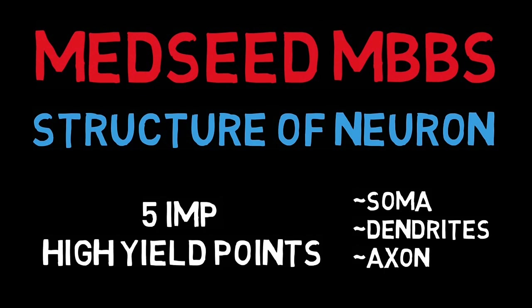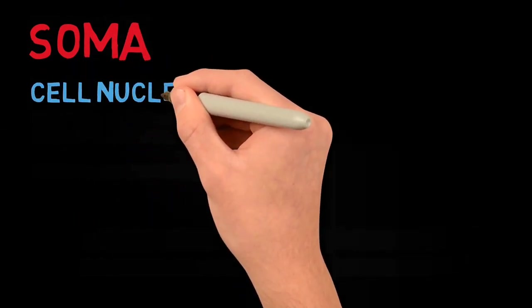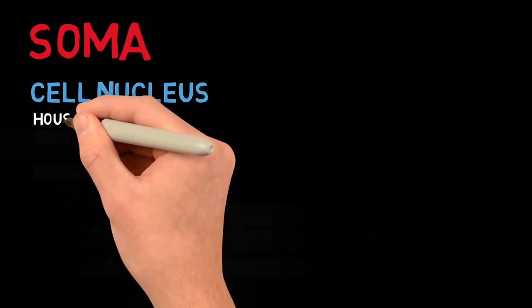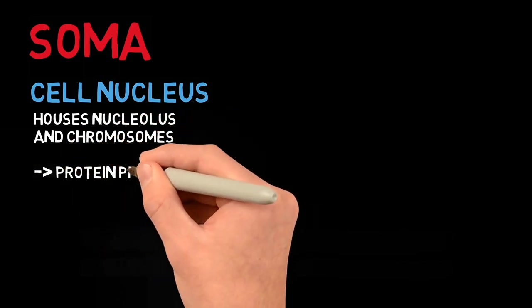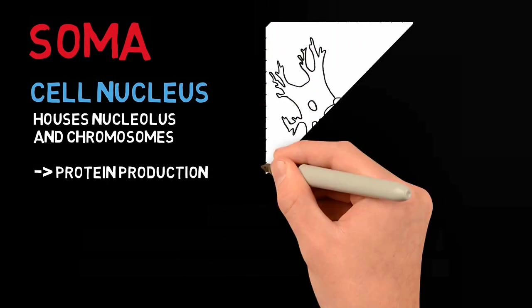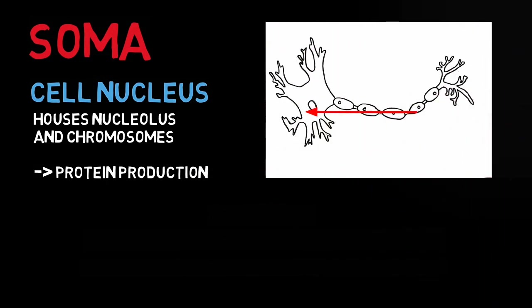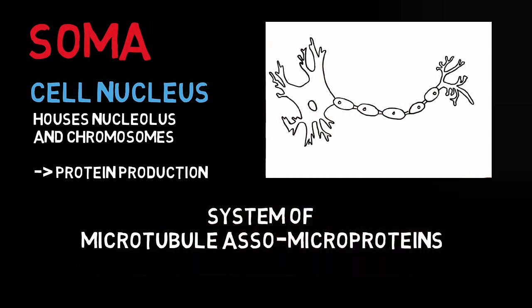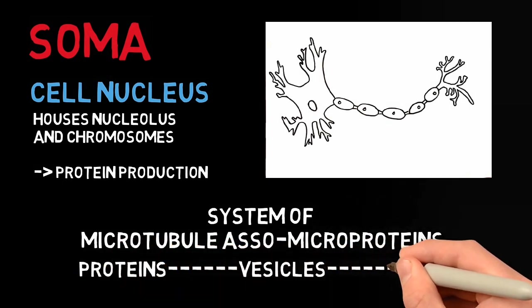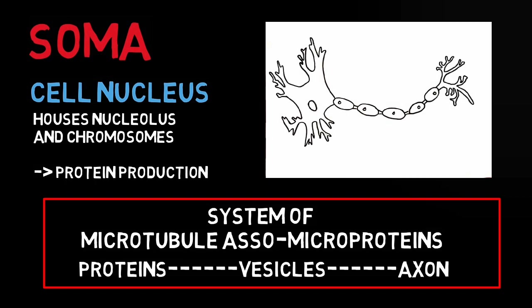A neuron has a cell body or soma with protoplasmic extensions to receive and transmit the signals or impulses. Starting with soma, it has the nucleus of the neuron along with other cell organelles. The nucleus is an oval shaped body that houses the nucleolus and chromosomes for production of protein. Delivery of these proteins manufactured in soma to the axons, which may be as far as a meter long, is done efficiently by a system of microtubule associated microproteins. This system delivers protein packaged in vesicles to the axon and ensures the healthy functioning of neurons.